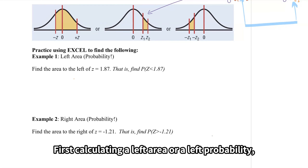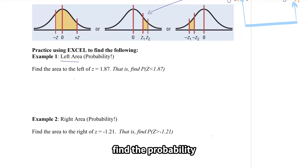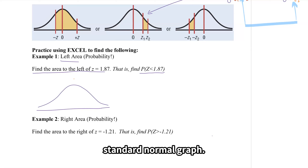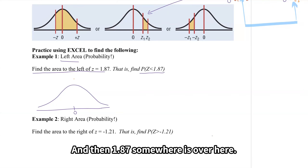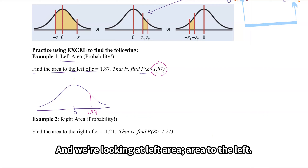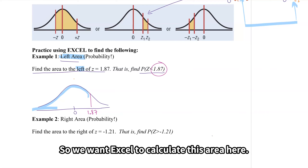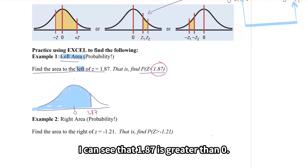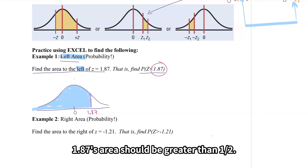Let's put this into practice, starting with a left-area probability. Find the probability that z is less than 1.87, or equivalently, find the area to the left of z equals 1.87. We start by drawing our standard normal graph: make a hill, put zero in the middle, and 1.87 is somewhere to the right of zero. We're looking at area to the left. Since 1.87 is greater than zero, the area to the left of 1.87 should be greater than half.